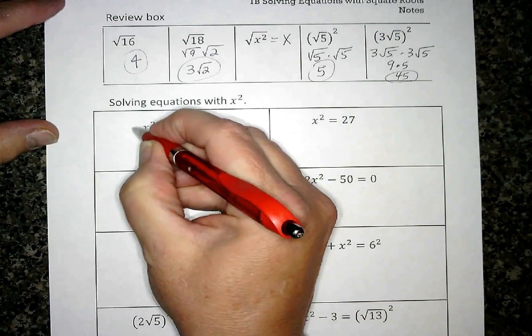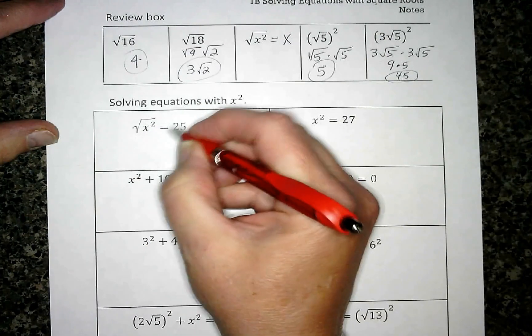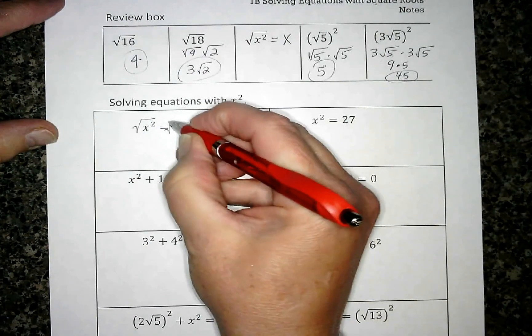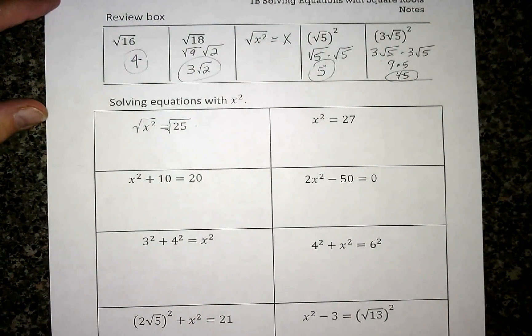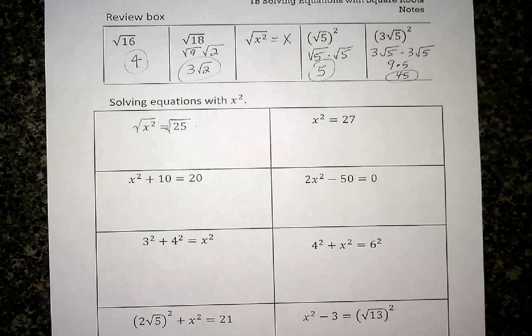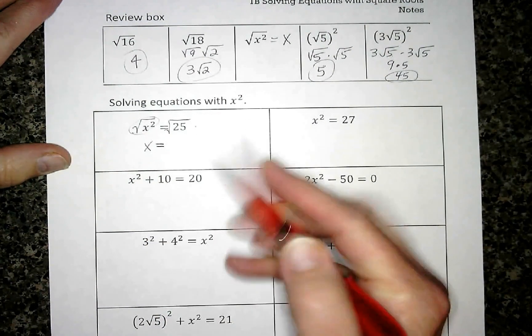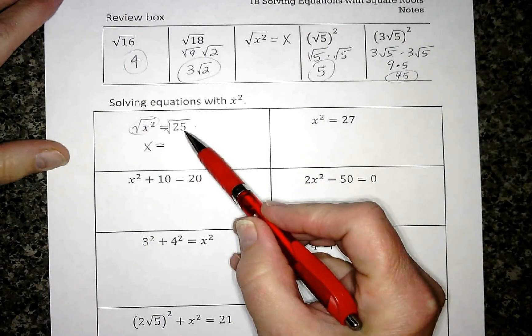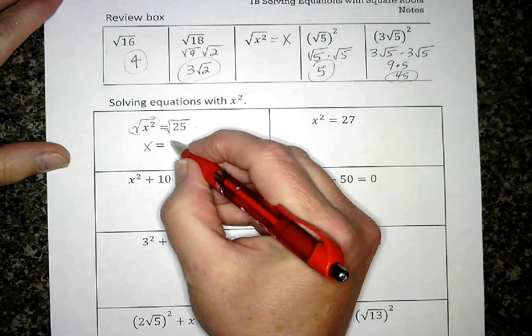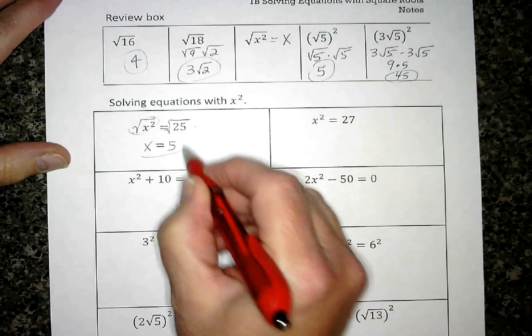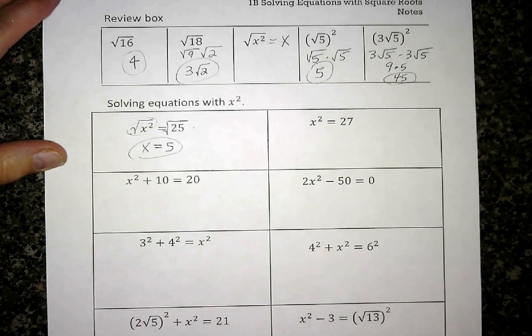I'm going to square root this side, and because it's an equation, I have to do exactly the same thing to the right side. That's the same way you learn how to solve equations - what you do to one side, you've got to do to the other. So this results in just a plain old x. On the other side, square root of 25 is perfect, so the answer for this would be x = 5.